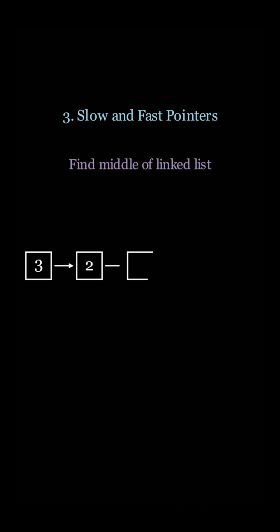Another use case is when you want to find the middle of a linked list. You can use slow and fast pointers. When the fast pointer reaches the end of the linked list, the slow pointer will be directly in the middle. This takes O of n time but O of n space.